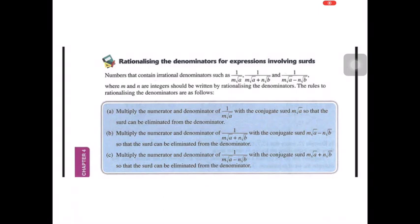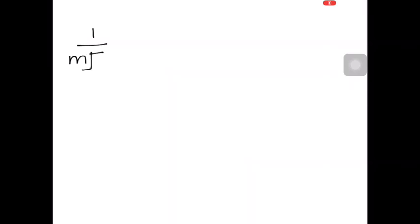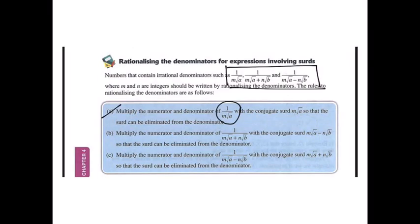In the topic surds, one of the technique that we need to master is rationalizing the denominator for expression involving surds. So these all are expression that contains surds. So how do you rationalize it? We will rationalize it by multiplying it with the conjugate surds. Why? Because we want to eliminate the surd.